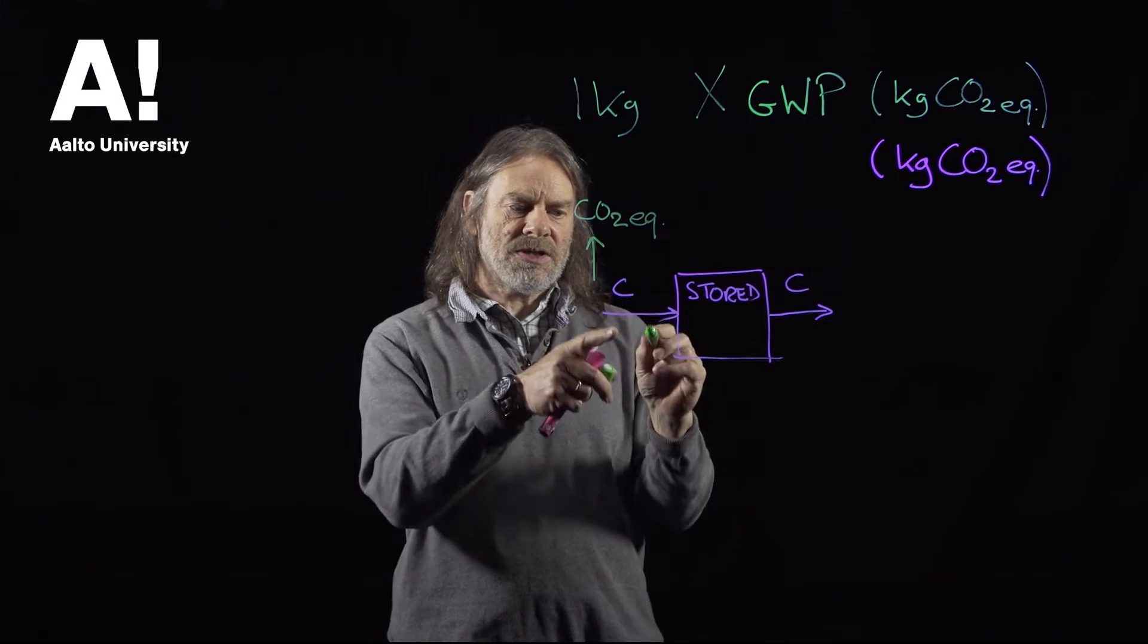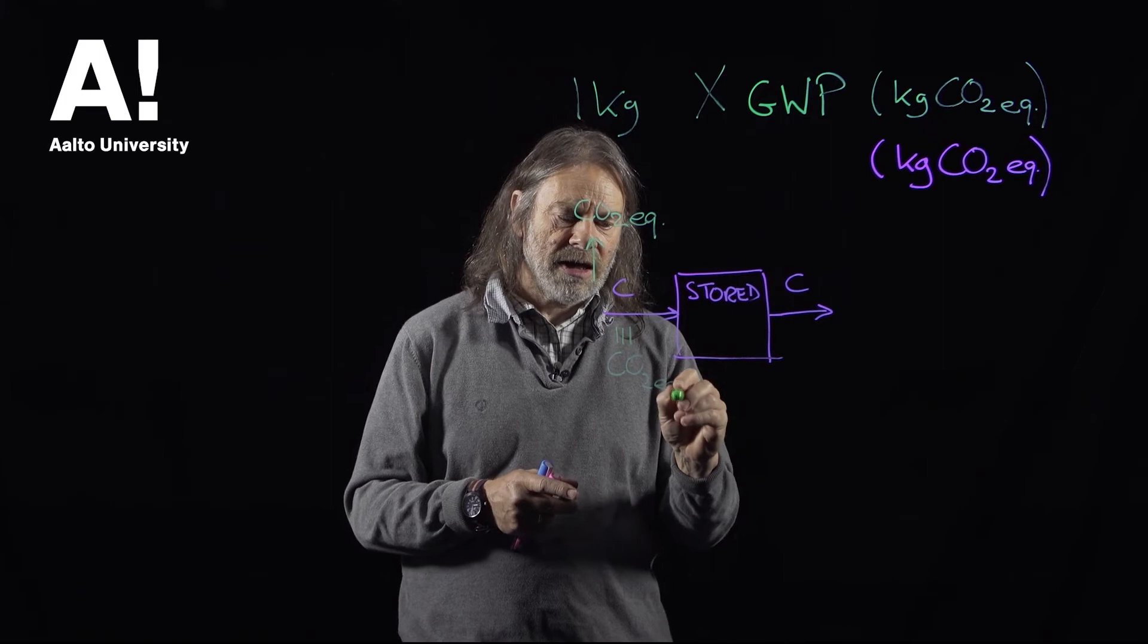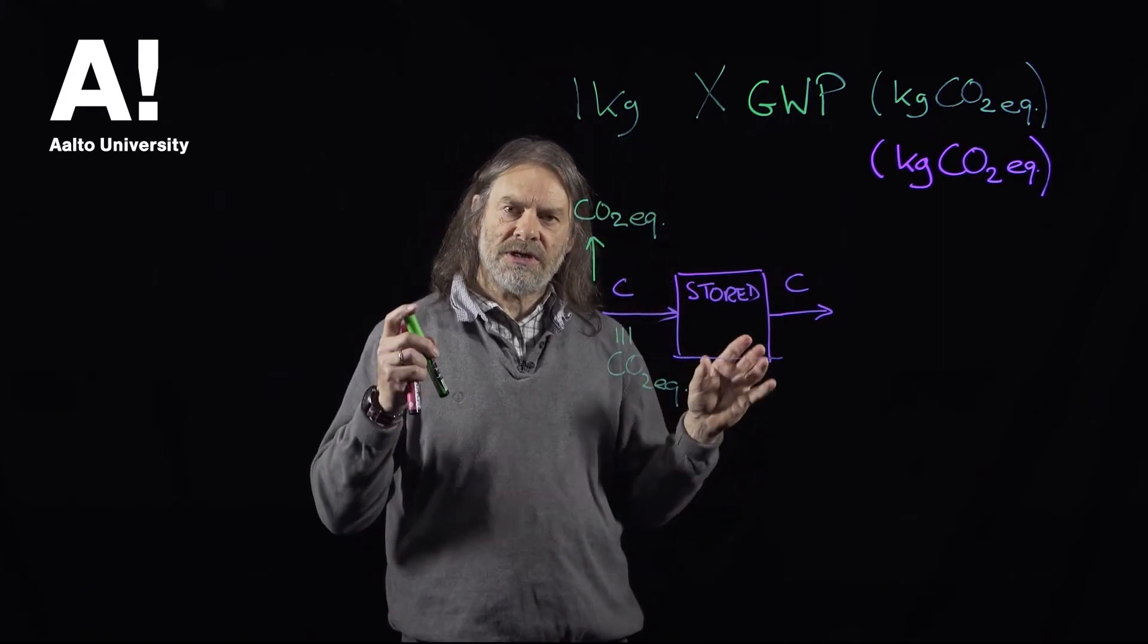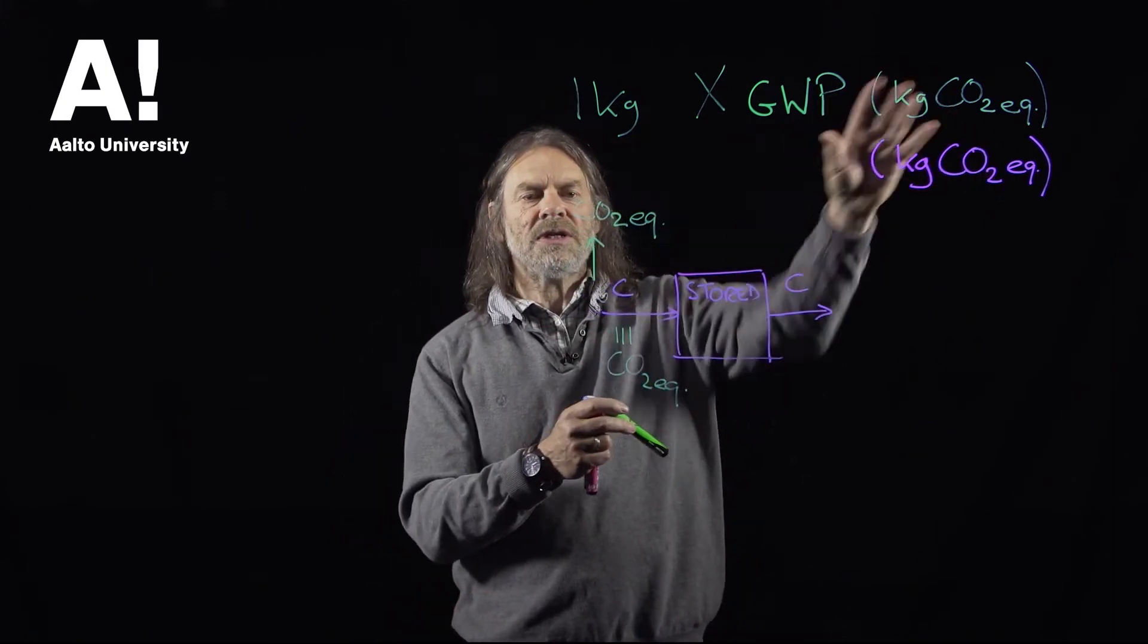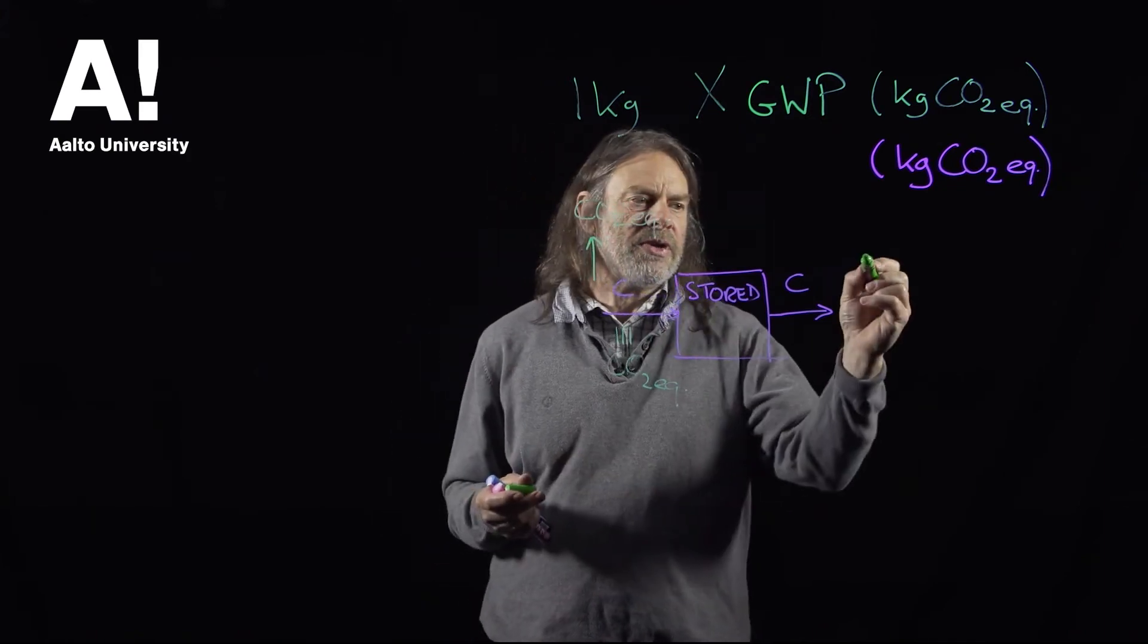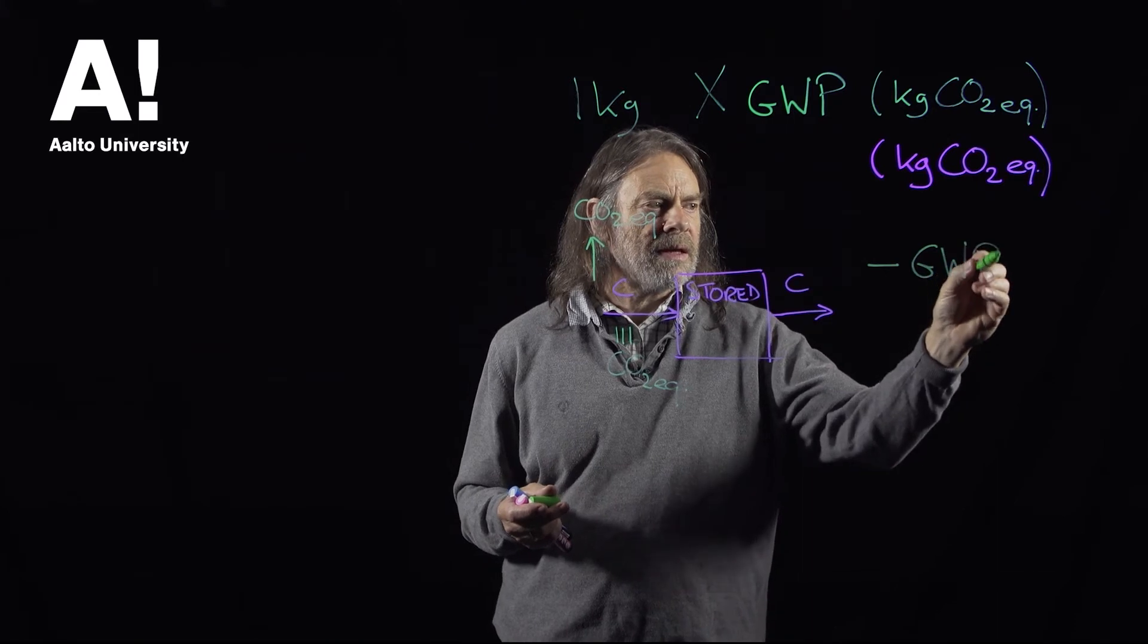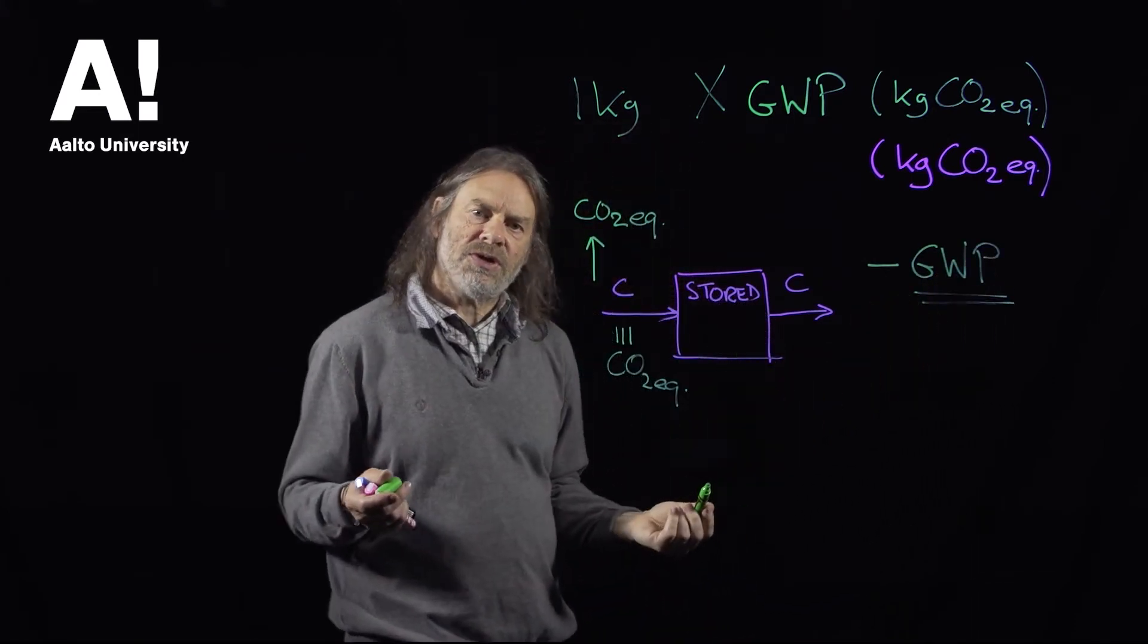So these two have an equivalence to carbon dioxide, and quite often you'll find in environmental product declarations and in life cycle assessment that both of these are combined together. And when you look at something like timber, you end up with a negative global warming potential, which is basically saying that it's beneficial to use wood.